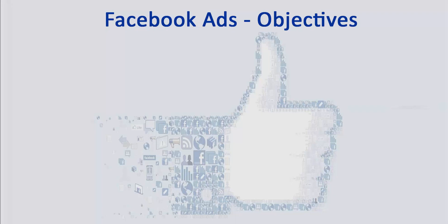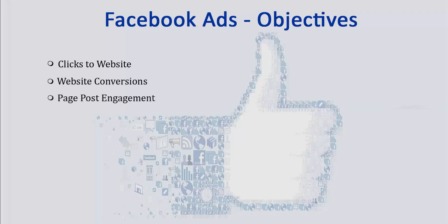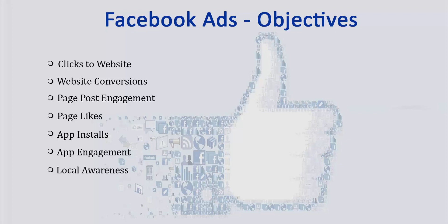These objectives include clicks for websites or to get conversions on the website. They also include getting engagement on various posts that are updated on the page, to build a fan base — that is to get likes for the page — to get app installs about your brand, to get engagement with the app on your Android store, to generate awareness, and to get event participation.